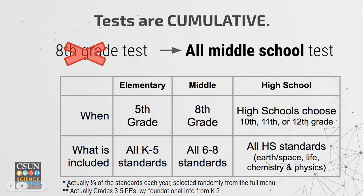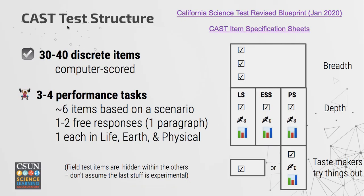One caveat for everybody is that it's not actually all the standards, because that would be way too much to include in one test. They actually sample out one-third of the standards each year, selected randomly from the full menu, so you still get the full breadth but you don't have to handle absolutely everything in one sitting. What types of questions are you going to have on the CAST? There are 30 to 40 discrete items.